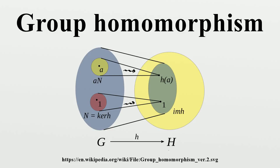The first isomorphism theorem states that the image of a group homomorphism h is isomorphic to the quotient group G/ker(h). The kernel of h is a normal subgroup of G and the image of h is a subgroup of H.